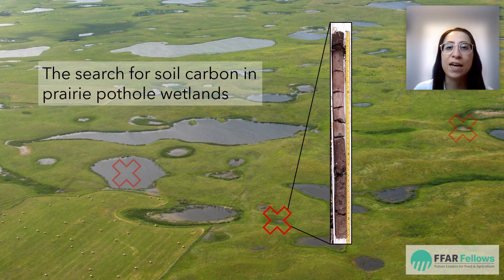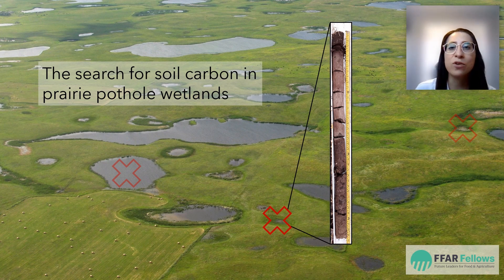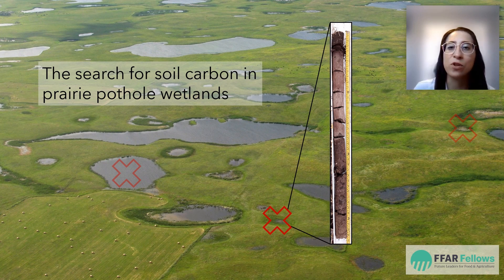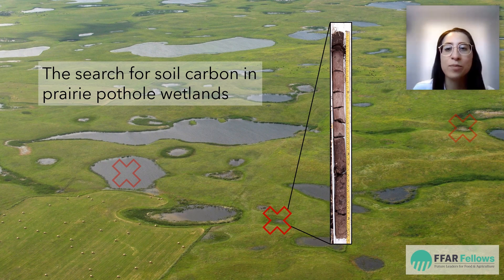To help spot wetlands I use satellite imagery that shows ponds over the past seven years. Then I go out to the field and take soil cores from the wetlands as shown here. At the top of the core we see a dark colored soil, and this dark color tells us that there's a lot of soil carbon there.